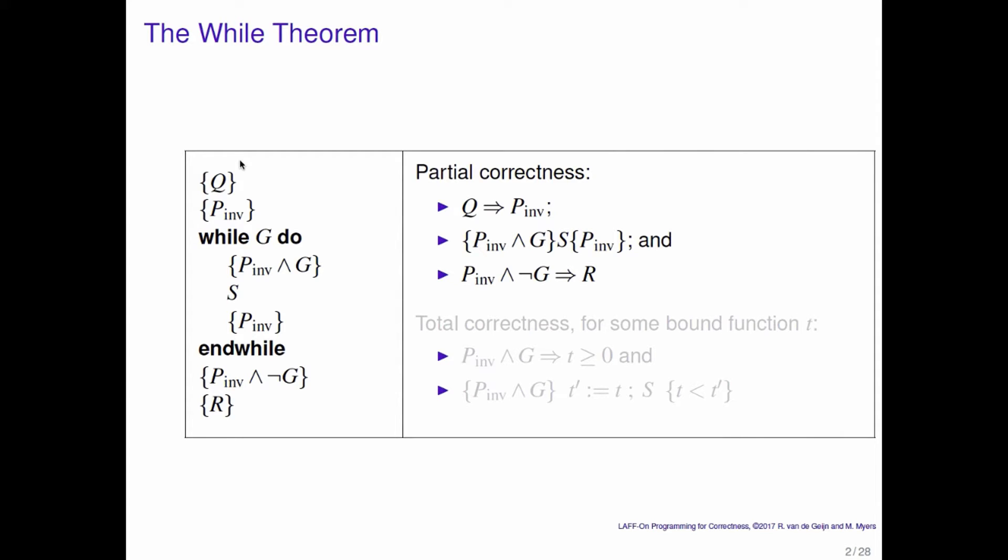What's the while theorem? The while theorem, much like the if theorem, is a checklist that you can use to check whether a loop is correct. We've been building up to this by talking about the loop invariant — where the loop invariant must be true — and how the loop invariant really allows you to use the principle of mathematical induction to reason about that loop.